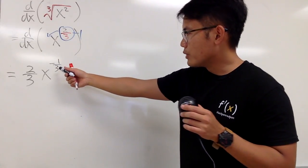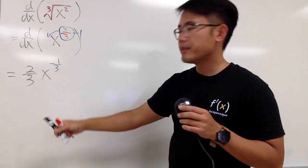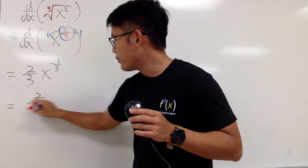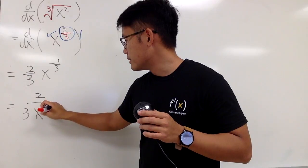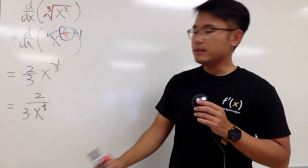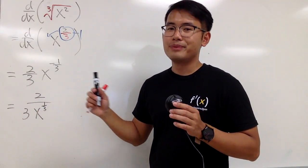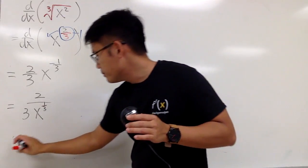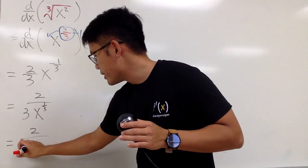And now, you may want to bring this down to the denominator. So you get 2 over 3, and then you have x to the 1/3 power. And you can also rewrite this back to the radical form.